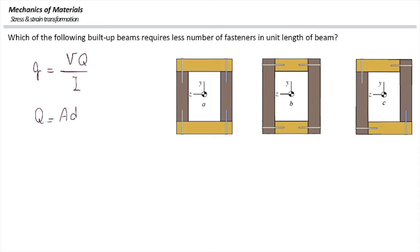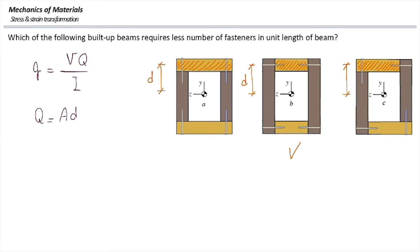The first moment of area Q is found by multiplying the area of the connected piece by the distance from its centroid to the centroid of the entire section. For the left section, Q uses the area of the top hatched shape. For the middle section, the connected area is smaller while D is the same. For the right section, D is again the same. The smallest area gives the smallest Q and smallest shear flow, requiring fewer fasteners — so the answer is the middle beam.